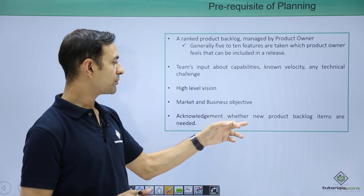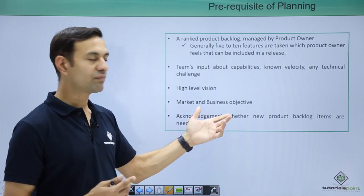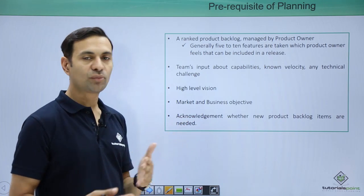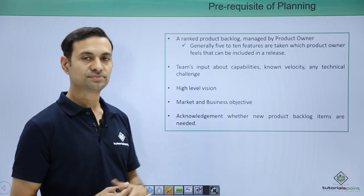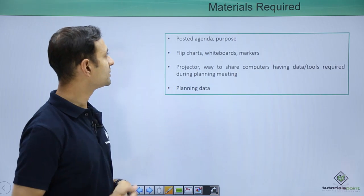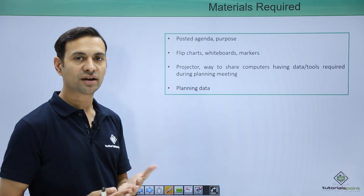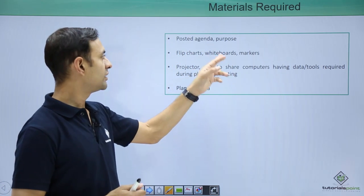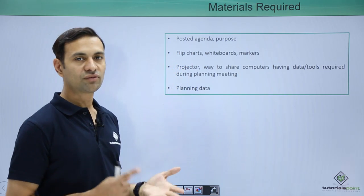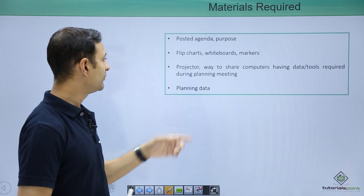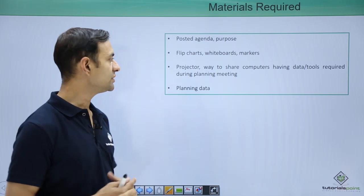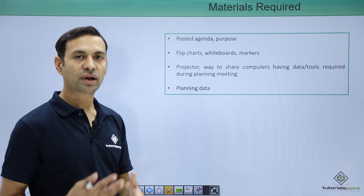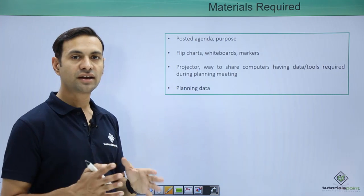We also acknowledge whether new product backlog items are needed. If we have more time to develop more functionality, then we can add new product backlog items. The next step is materials required. Because there are so many people involved in this meeting, we need a posted agenda, a clear purpose, flip charts, whiteboards, markers, a projector to share information, and computers for sharing data tools required during the planning meeting, so that the planning data is clearly envisioned.